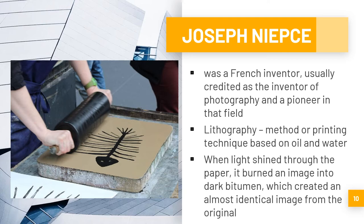In the 1820s, Joseph Niépce, a French scientist, improved lithography, defined as a method of printing technique based initially on the immiscibility of oil and water. Joseph discovered a way to copy engravings into glass using a variety of materials. When light shined through the paper, it burned an image into dark bitumen, creating an almost identical image from the original.